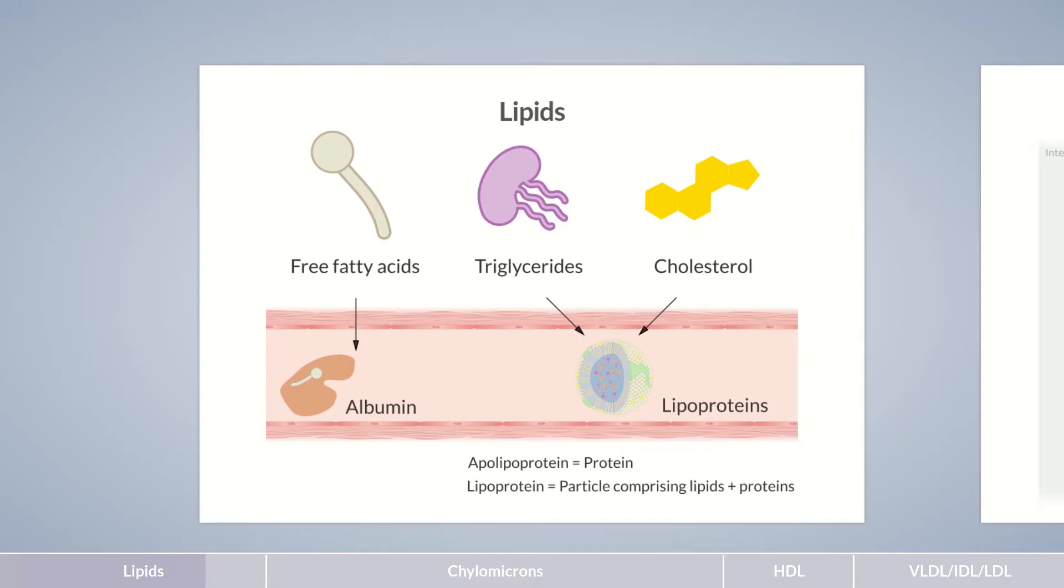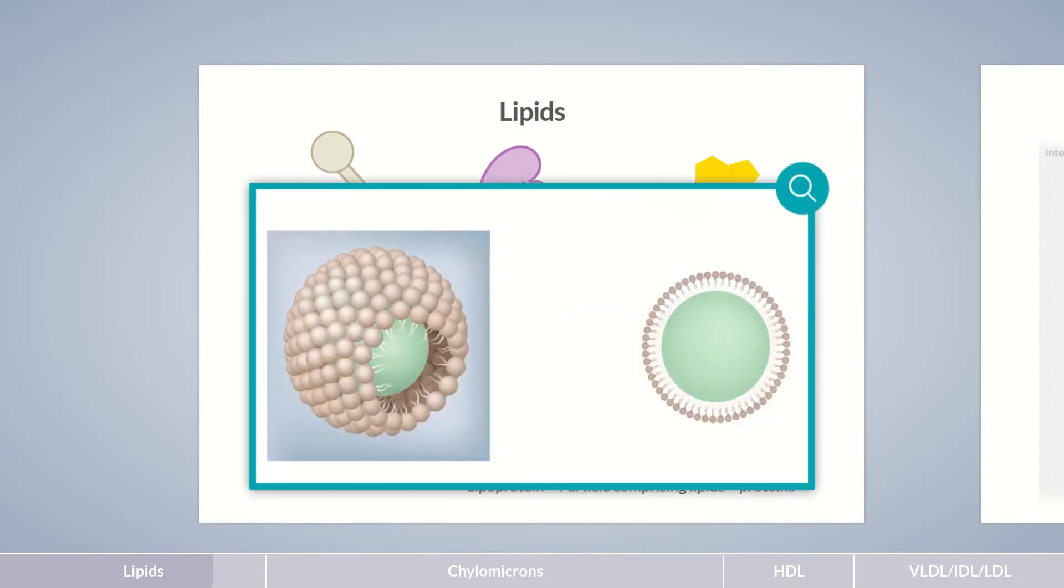Before we delve into the lipoprotein structure, let's take a look at how lipids act in water. Due to the repulsion between the polar water molecules and the nonpolar lipid molecules, the contact area between both is at a minimum. Accordingly, lipids form spherical structures termed micelles. Lipids aren't usually completely hydrophobic, but have a small polar portion, for example, the head group of phospholipids. Therefore, lipids arrange themselves in a particular way. The polar heads form the hydrophilic outer layer of the micelle, and the nonpolar hydrocarbon tails form the micelle core.